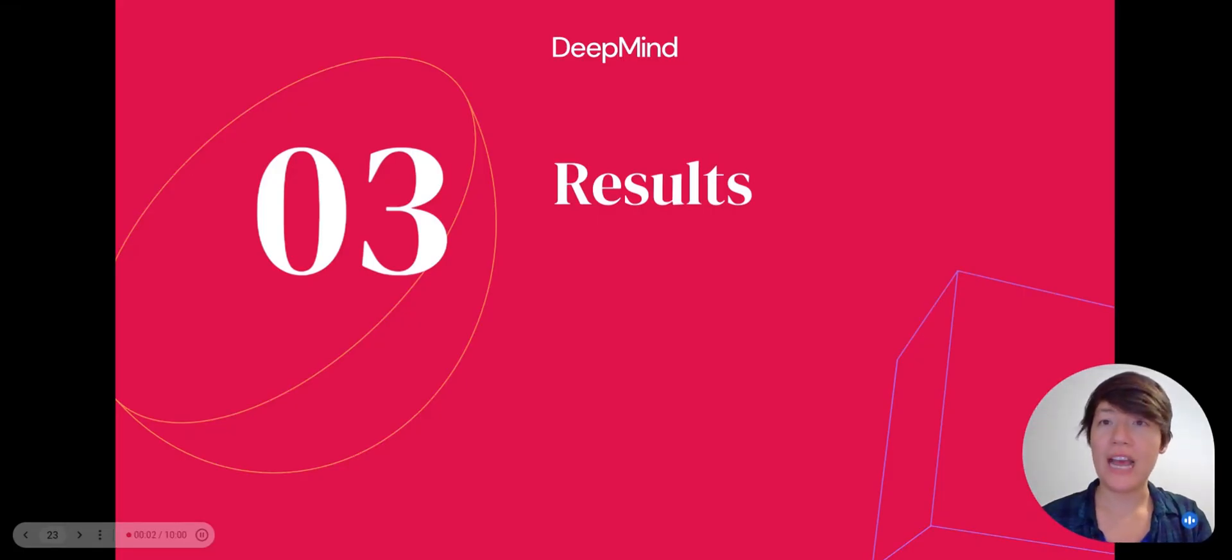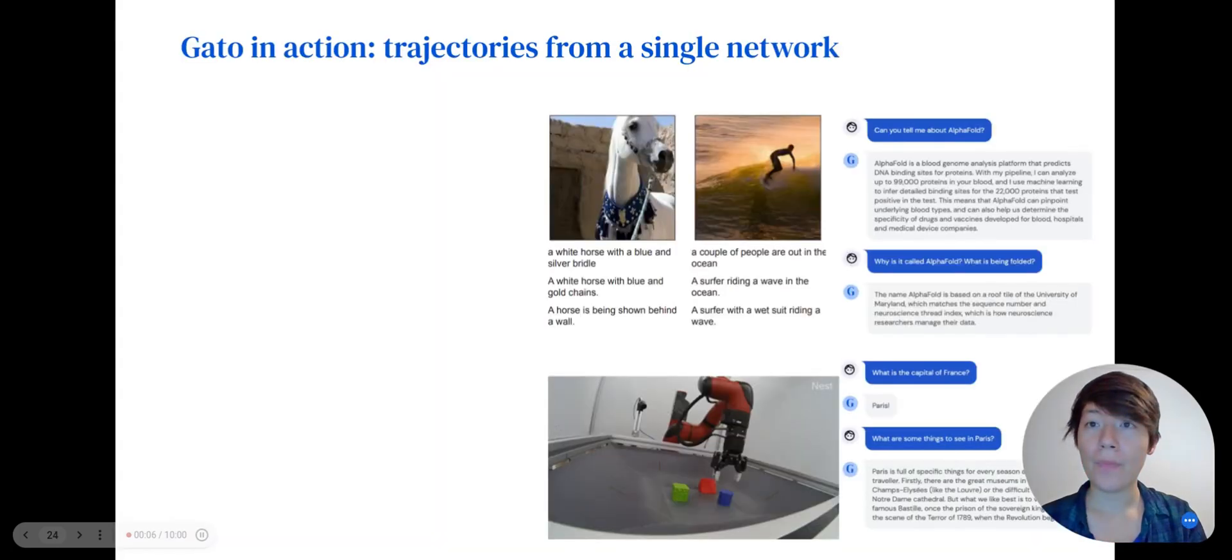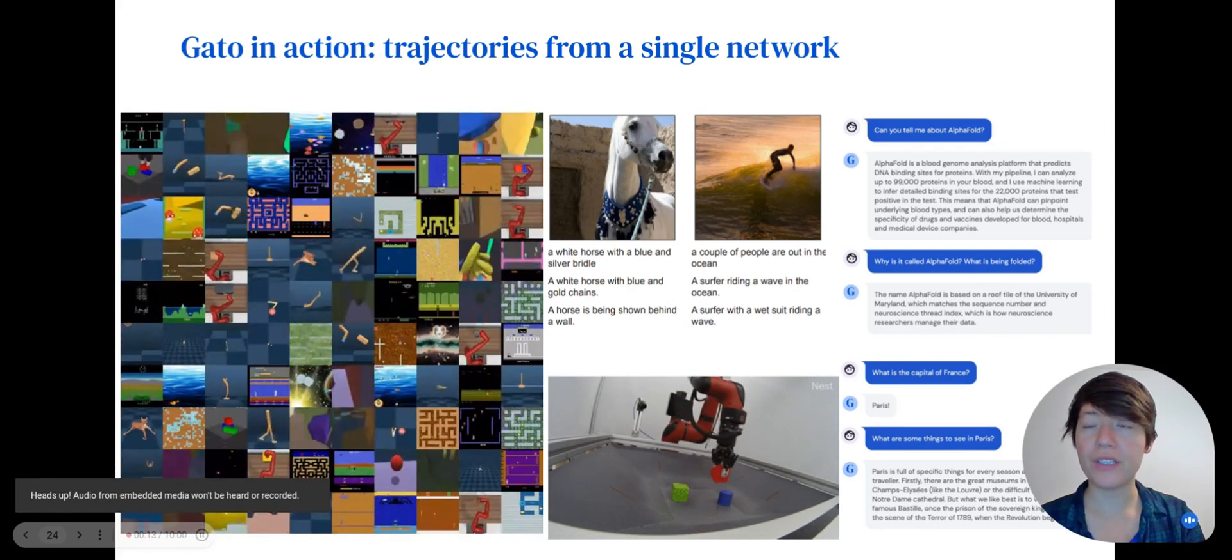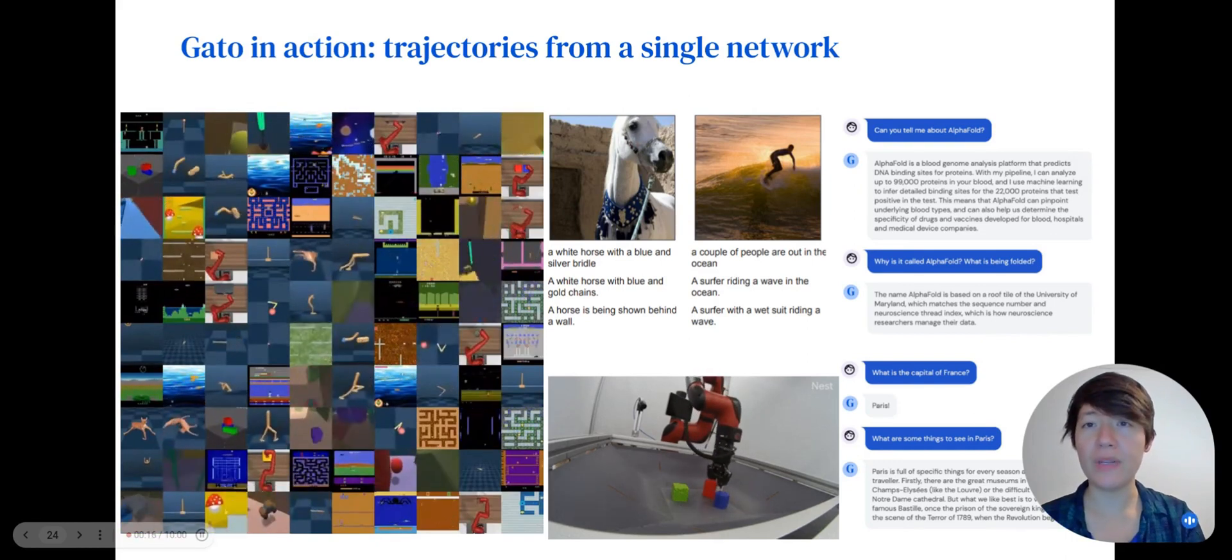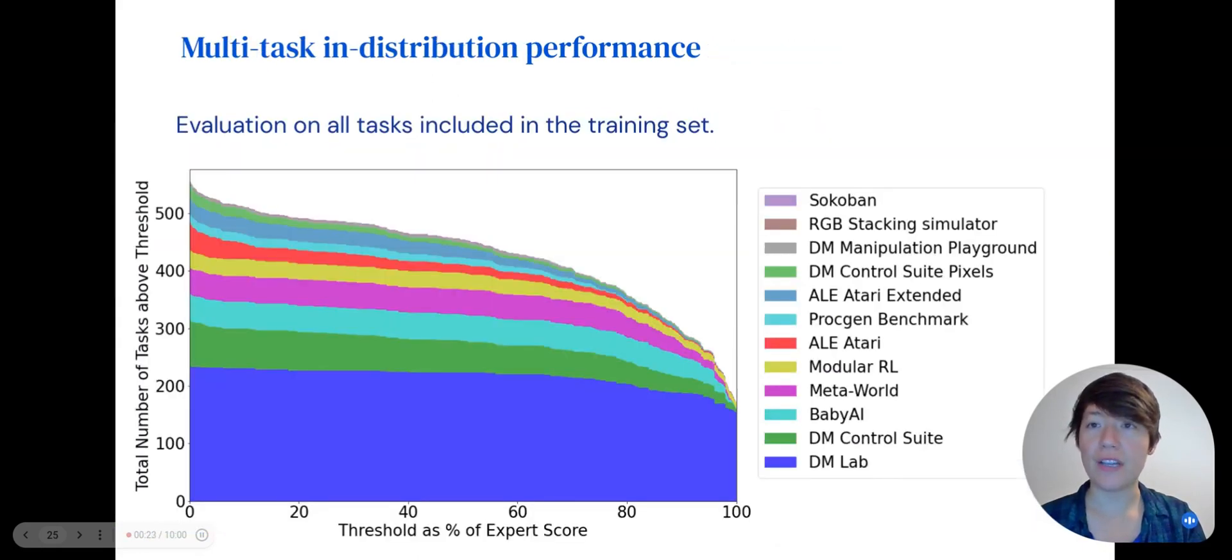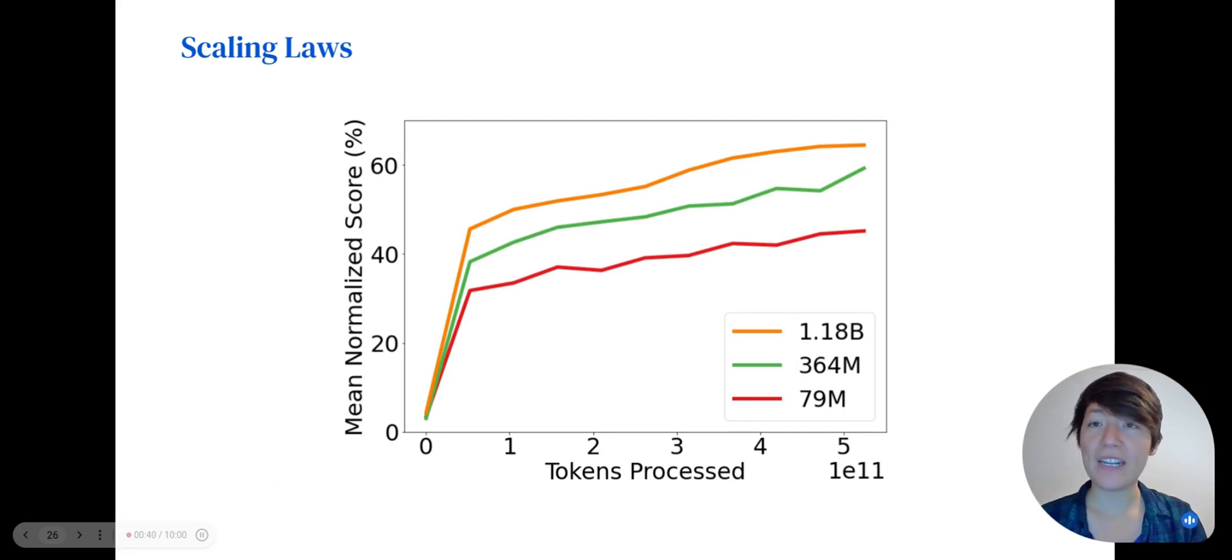Next, we'll present our results and analyze Gato's performance on in- and out-of-distribution tasks. We evaluated the model on over 600 simulated tasks, the RGB stacking benchmark for real-world robotics, and qualitatively evaluated it on its image captioning and dialogue capabilities. This plot shows the number of in-distribution tasks where Gato's performance exceeds the score of the expert who gathered the data. Gato exceeds 50% of the expert's score on 75% of the tasks. The model that produced these results is the canonical 1.18 billion parameter Gato.